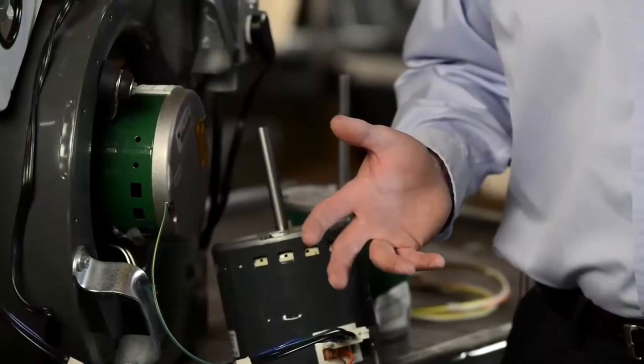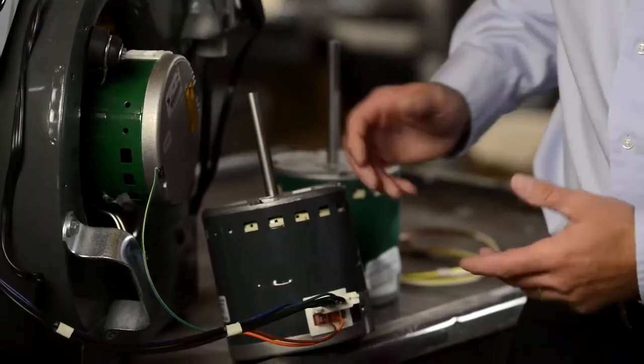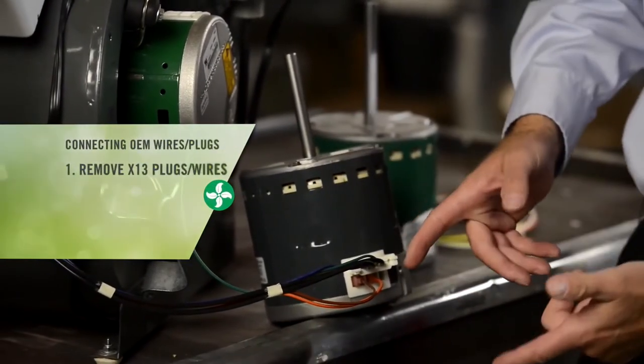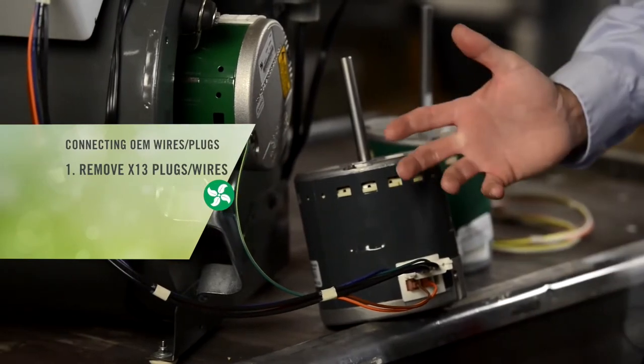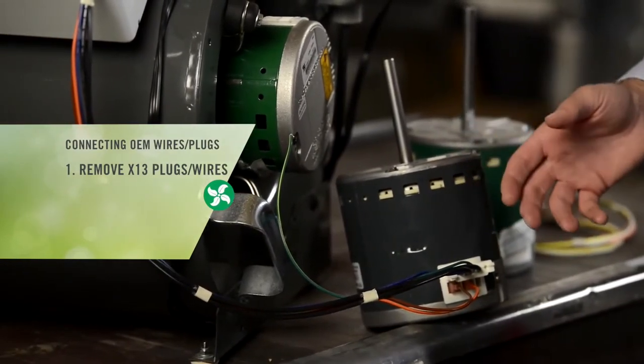And now it's time to install the wires from the X13 over to the Evergreen EM. So we're going to go to the X13, remove the wires, which could either be plugs or individual wires. It's really up to the OEM how they want to connect the wiring to the X13 motor.